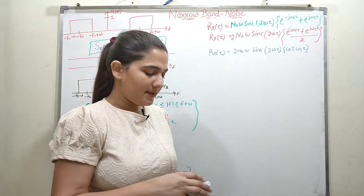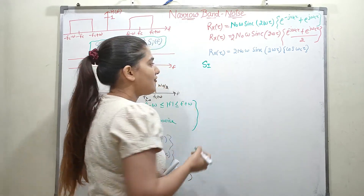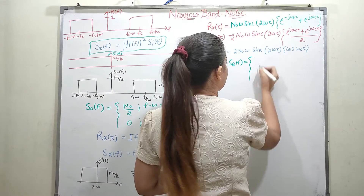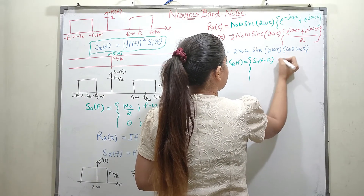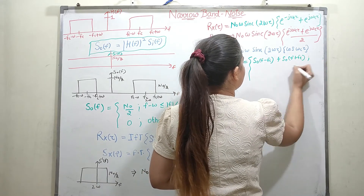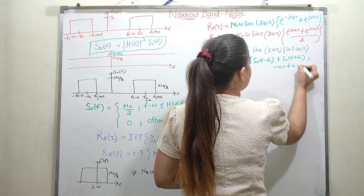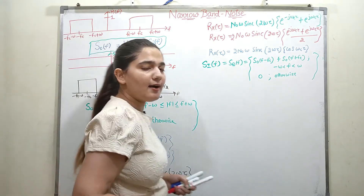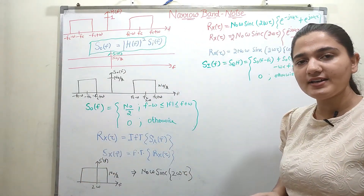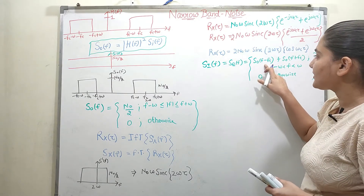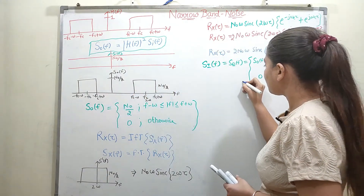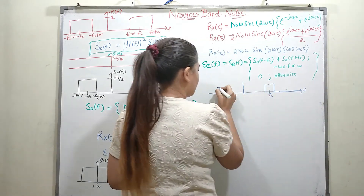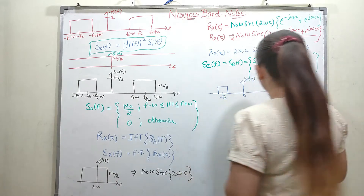In my previous video, the last property stated that the power spectral density of the in-phase component S_I(F) and the quadrature component S_Q(F) equal S_output(F − Fc) + S_output(F + Fc) for |F| ≤ W, and 0 otherwise. According to this property, I will now find the power spectral density of the in-phase and quadrature components, knowing the output power spectral density S_output(F).